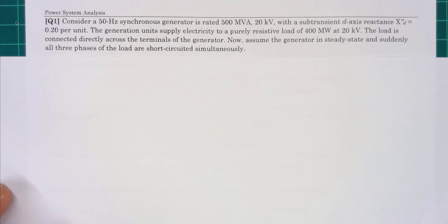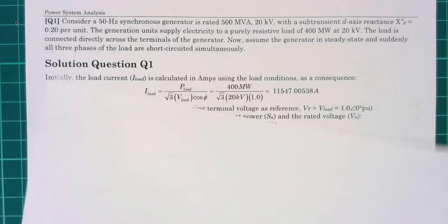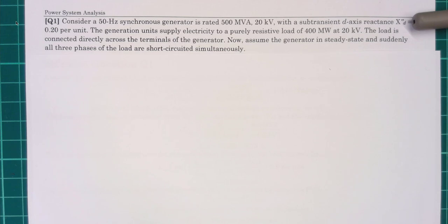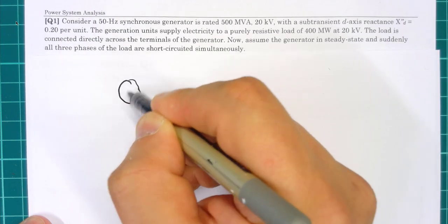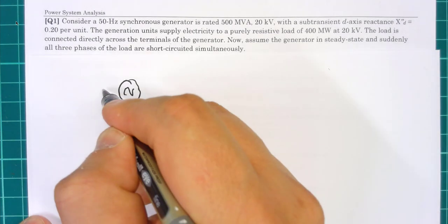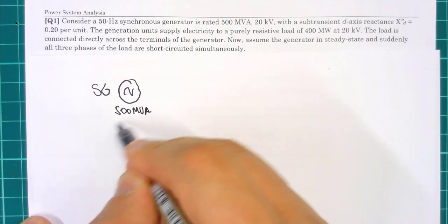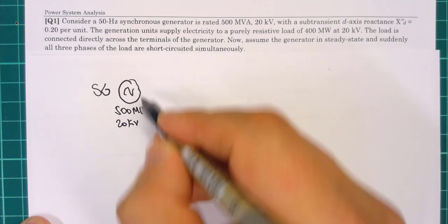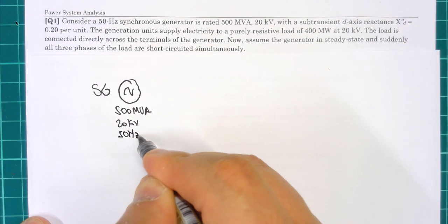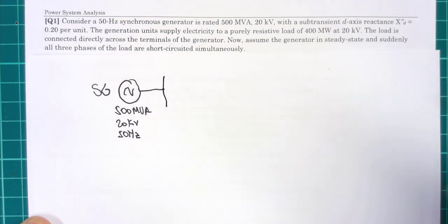Specifically, a three-phase short circuit. In this example we have a 50 Hz synchronous generator rated 500 MVA, 20 kV. This is a synchronous machine operating at 50 Hz.